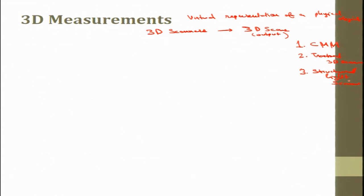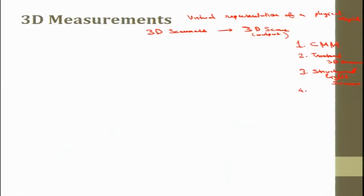The structured light scanner uses the change in the light pattern to tell us the various profiles or curves of the object. One more type of scanner is the portable 3D scanner. Portable 3D scanners can be either CMM-type or many other types — essentially anything that can be held in hand and taken to the machine or component that we wish to measure is called portable. These are the major kinds of scanners.